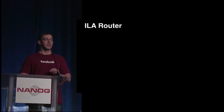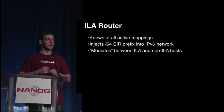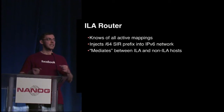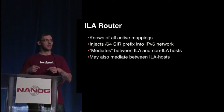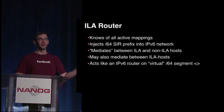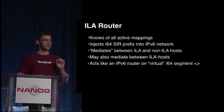The ILA router is responsible for knowing all ID-to-locator mappings in the network. It maintains a full cache, injects the SERP prefix to attract traffic from non-ILA hosts, provides mediation between non-ILA and ILA worlds, and also provides the gateway function between ILA processes. Think of the ILA router as a normal IPv6 router on this one virtual segment — it's a very useful analogy to understand how ILA works.